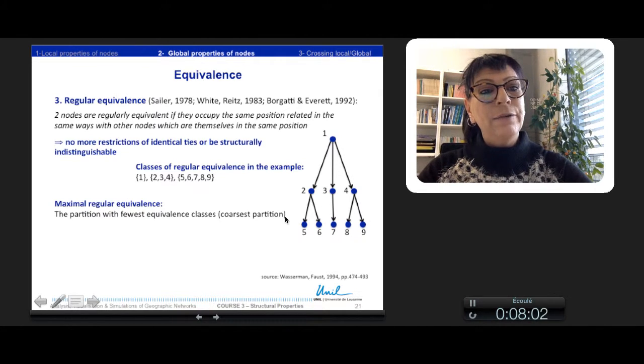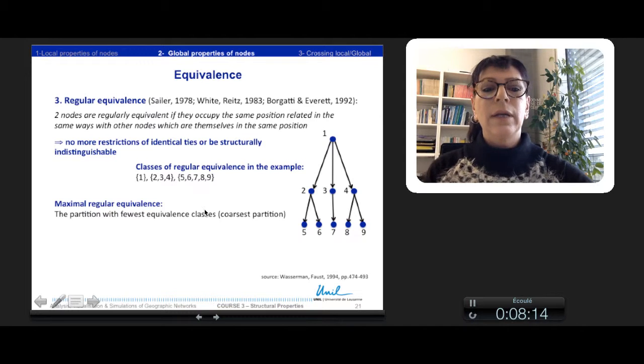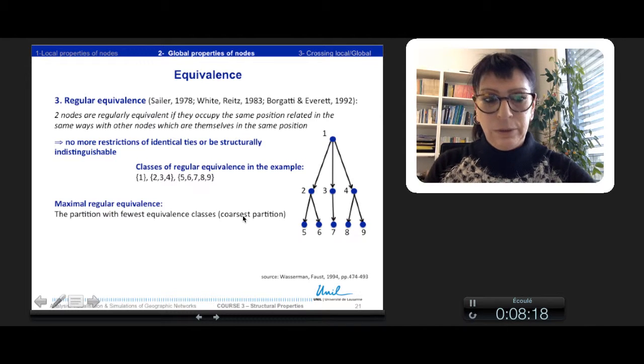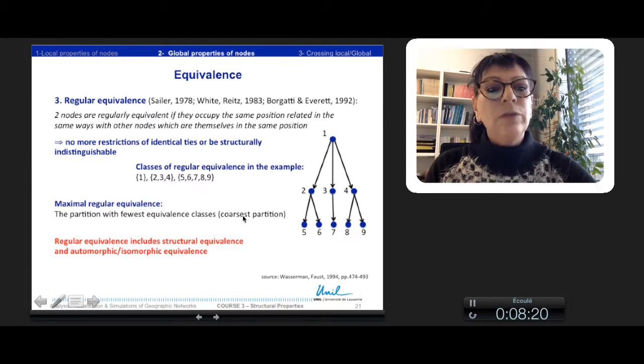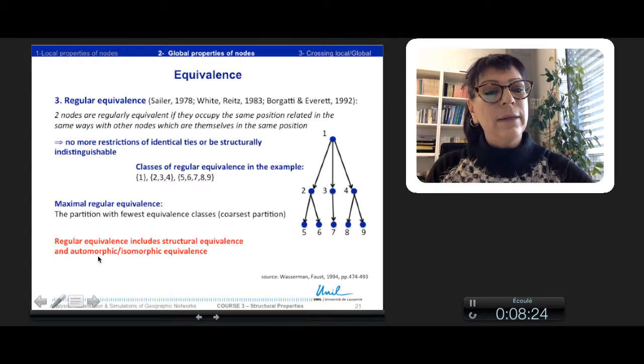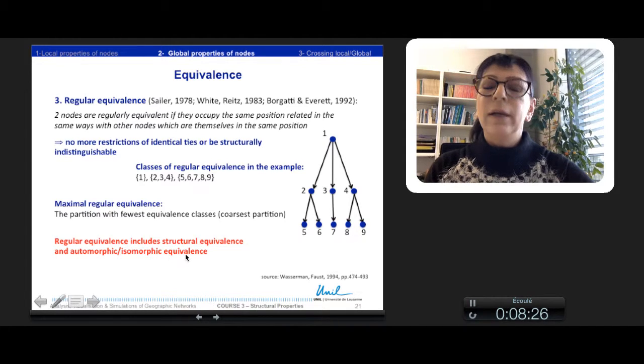In this case of regular equivalence we can define the maximal regular equivalence which is the partition with fewer equivalent classes. So the largest classes that we call also coarsest partition. The regular equivalence includes the structural equivalence and automorphic-isomorphic equivalence as it is less restricted.